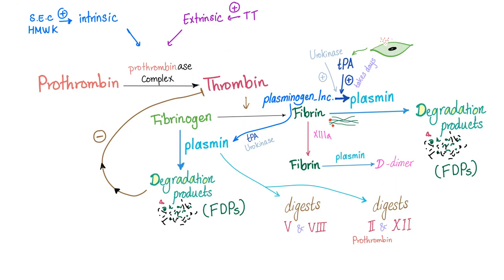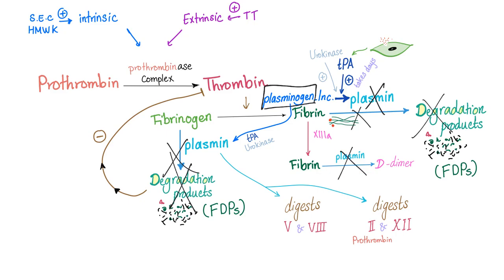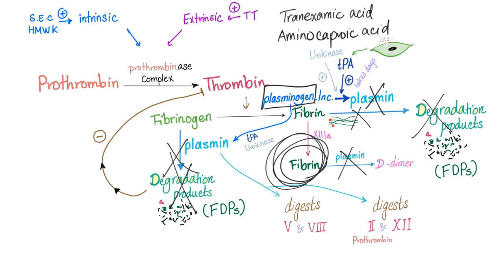Fibrinolysis: plasminogen converts to plasmin, which destroys fibrin into degradation products and fibrinogen into fibrinogen degradation products, and destabilizes fibrin into D-dimer. With anti-fibrinolytic therapy, plasmin is history. We keep plasminogen inactive — therefore we're not going to degrade the fibrinogen, fibrin, or stabilized fibrin — we preserve the clot. Thank you, tranexamic acid and aminocaproic acid.